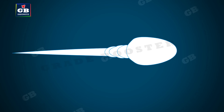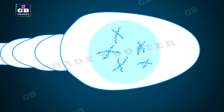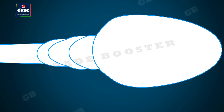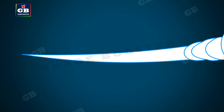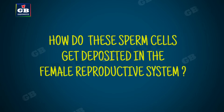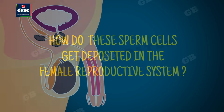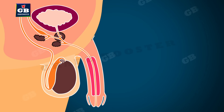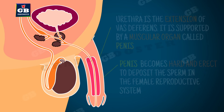Sperms are tiny bodies that consist mainly of genetic material and a long tail that helps them to move towards the female germ cell.